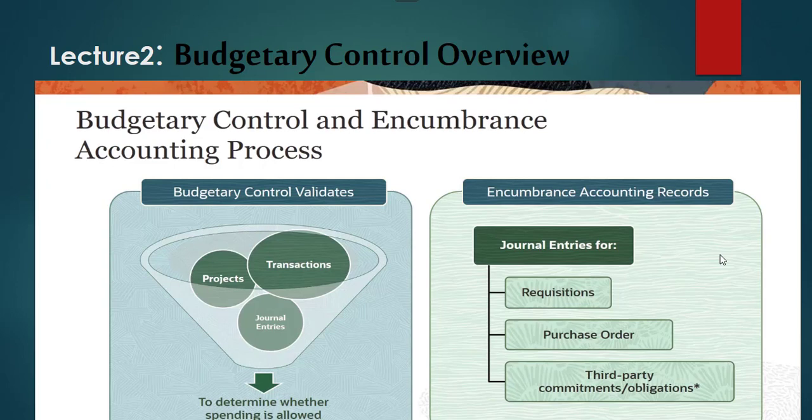These independent processes are managed by budgetary control, subledger accounting, and general ledger. The budgetary control process provides additional validation on transactions, projects, and journal entries to determine whether spending is allowed. By transactions, we mean requisitions — both internal and external — purchase orders, change orders, spend authorizations, expenses, and receiving transactions, as well as payable invoices.